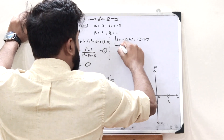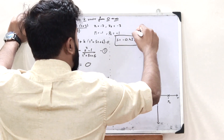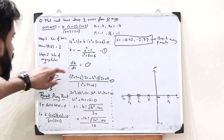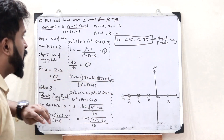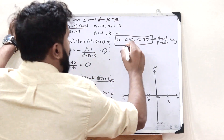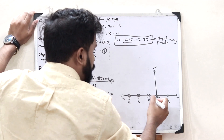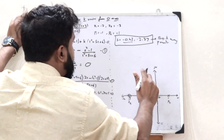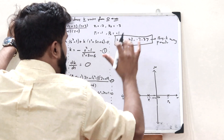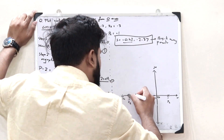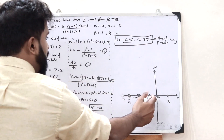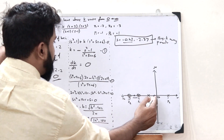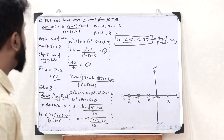These are the two breakaway points. Let us now plot them on the graph. The first breakaway point, −0.42, is somewhere around here, and the second, −2.37, is somewhere around here. These are the two breakaway points of this particular root locus.